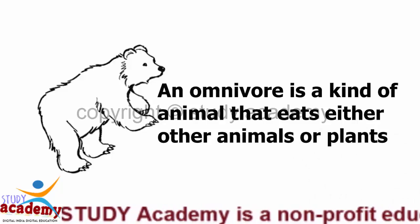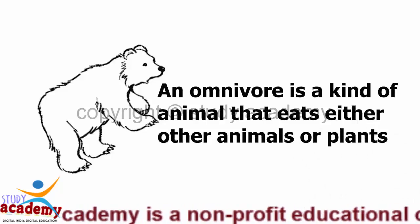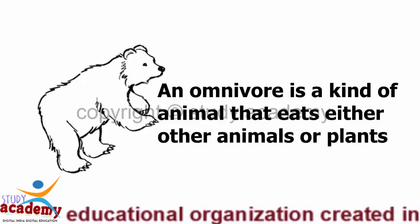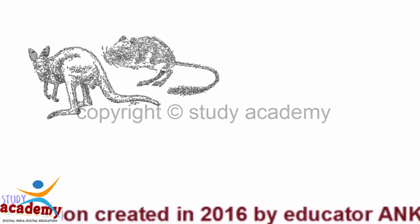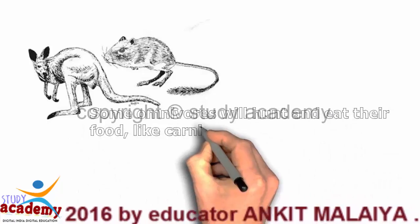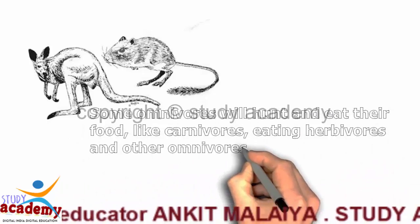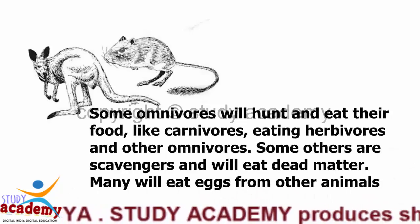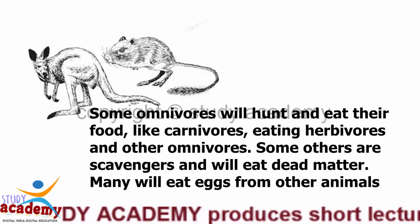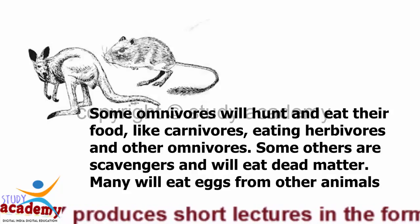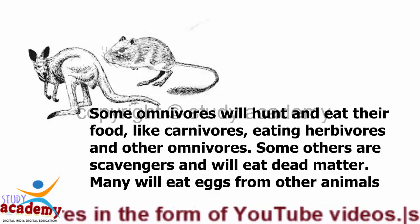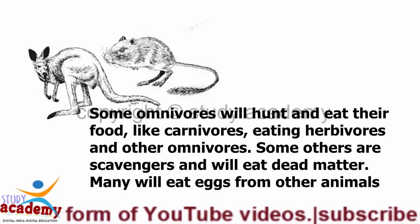An omnivore is a kind of animal that eats either other animals or plants. Omnivores will hunt and eat their food, like carnivores, eating herbivores and other omnivores. Some others are scavengers and will eat dead matter. Many will eat eggs from other animals.